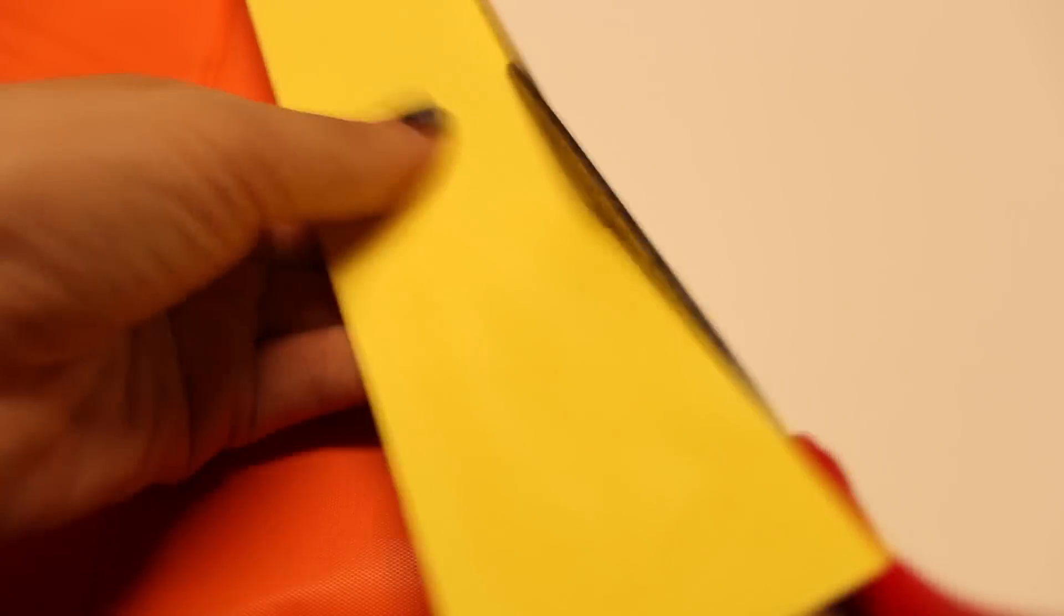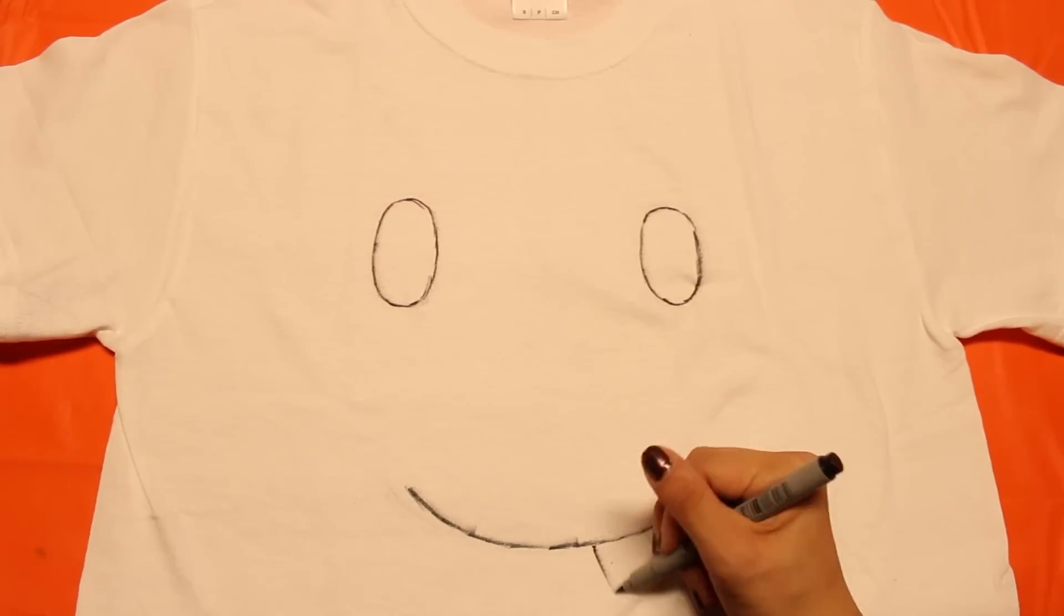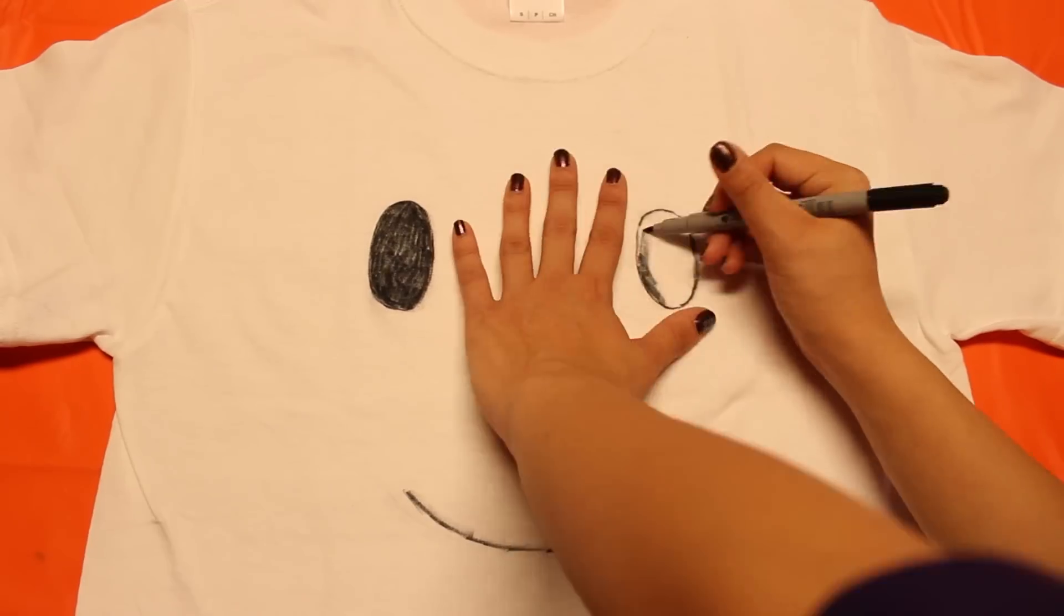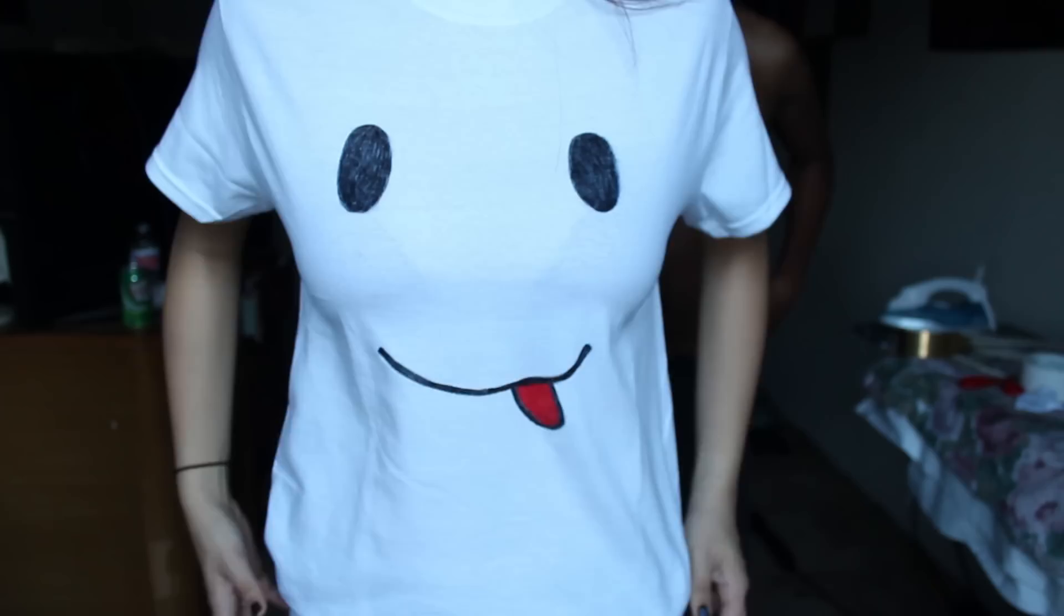So first you're going to take the glue and just glue the yellow poster board to the white poster board. And then you can cut off any excess yellow poster. Next you're going to draw the Snapchat ghost's face right onto the white t-shirt. Pretty simple, huh? And there's your shirt!